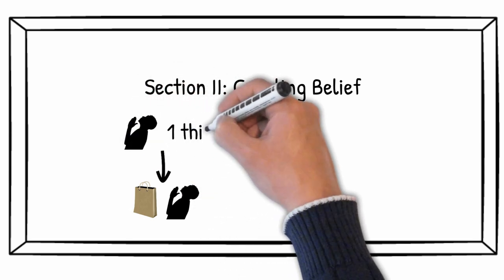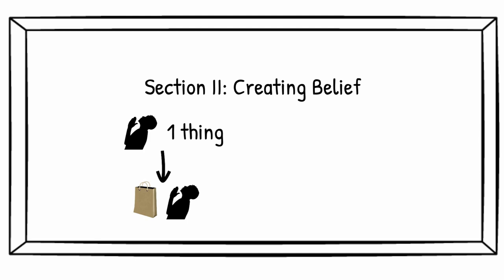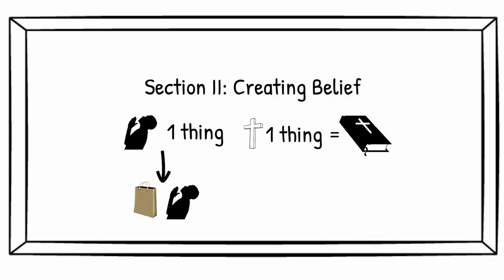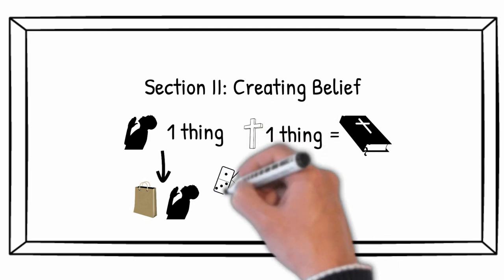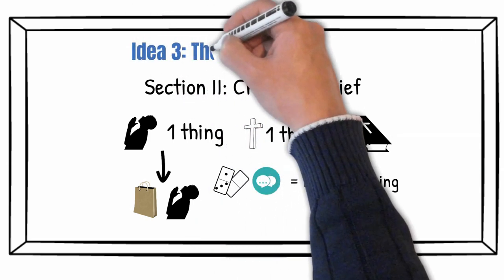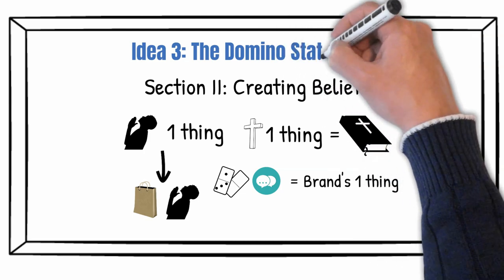For example, for Christians, if you believe the Bible, all the other things fall into place. That's why Russell created the domino statement. It can serve as a sort of a Bible for your movement. Check out the full formula in the description. Idea number three is the domino statement.